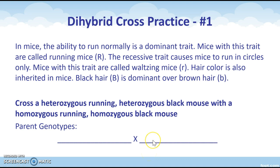Number one says: in mice, the ability to run normally is a dominant trait. Mice with this trait are called running mice, represented with a capital R. The recessive trait causes mice to run in circles only — these are called waltzing mice, with lowercase r. Hair color is also inherited in mice. Black hair, capital B, is dominant over brown hair, lowercase b. The cross is a heterozygous running, heterozygous black mouse with a homozygous running, homozygous black mouse.